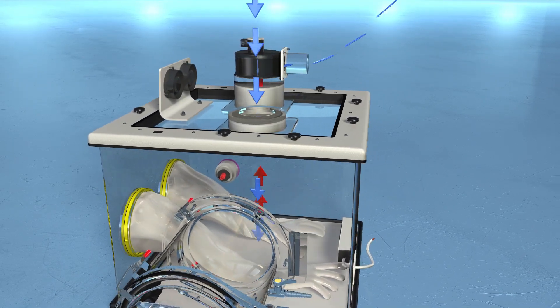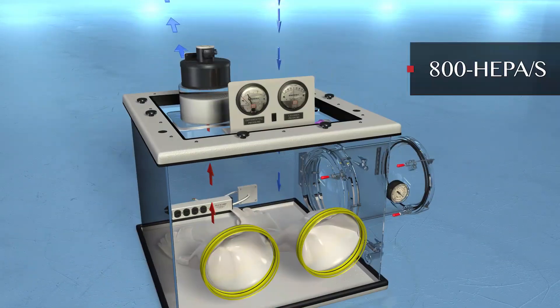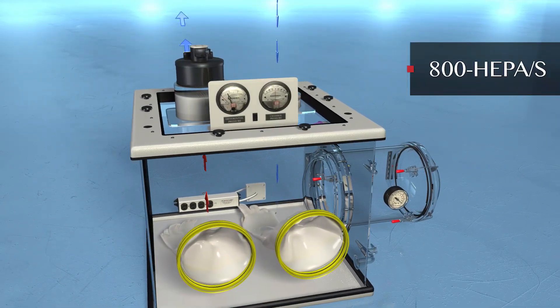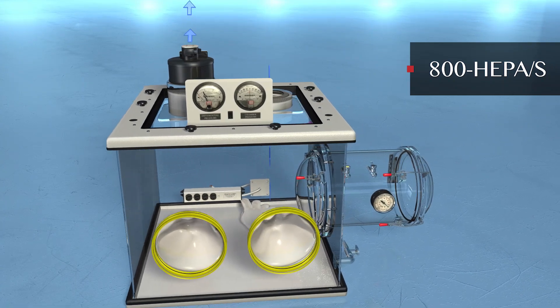Plaslabs offers three types of HEPA filtration setups. 800 HEPA S. Single HEPA filtration provides HEPA filtered air into or out of the glove box.